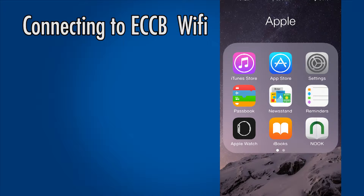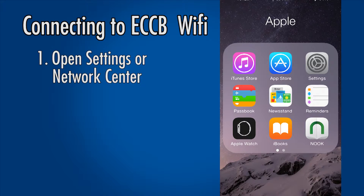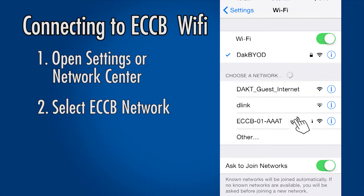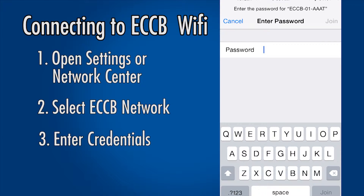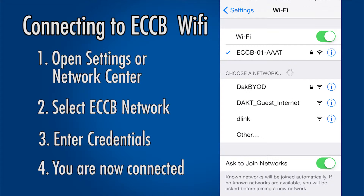To connect to the Daktronics ECCB Wi-Fi network, open the settings area of your phone or other Wi-Fi capable device and select the ECCB Wi-Fi network that shows up. When prompted, enter the login credentials for the network. This is different for every display and will be on the quick guide that shipped with your display. Once you are connected to the Wi-Fi network, you can now access the software to create and edit messages.